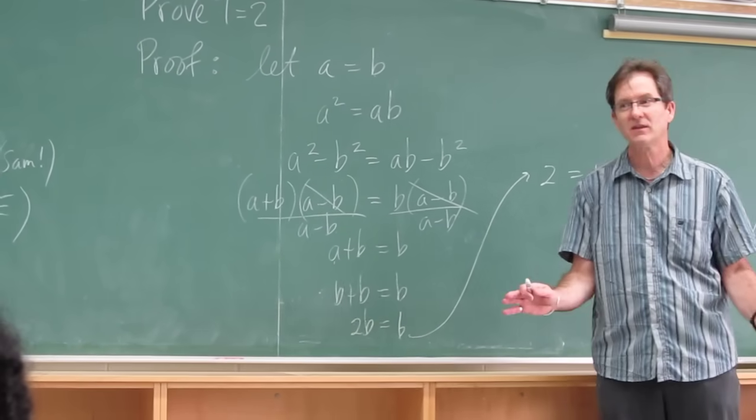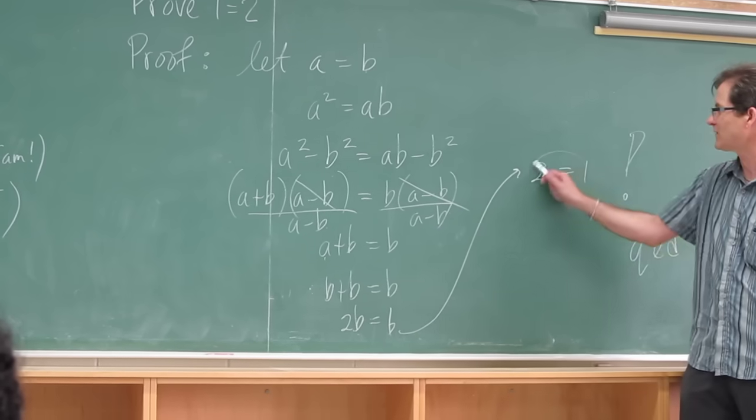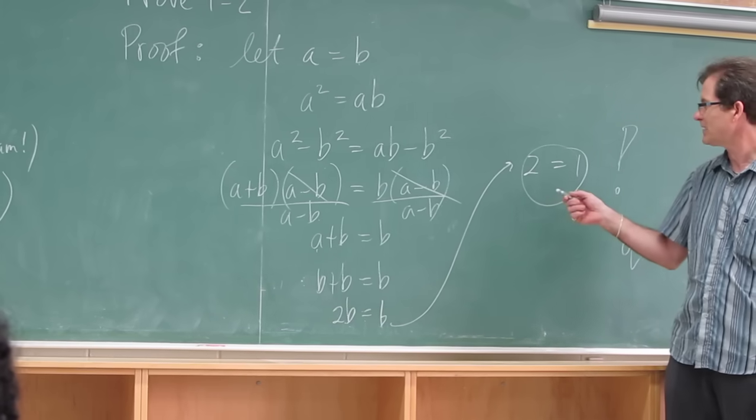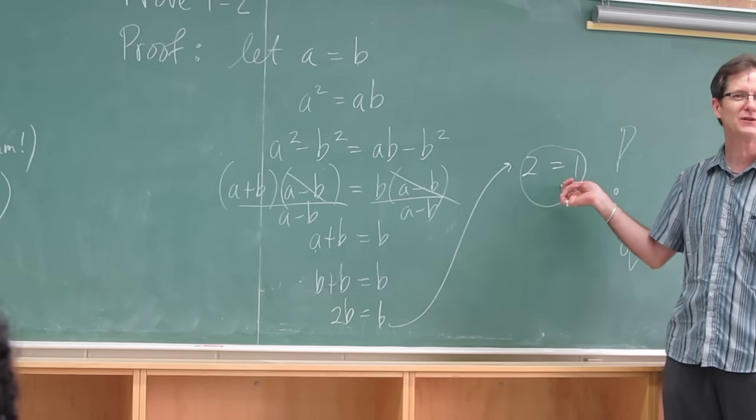When you divide by zero, all sorts of weird things can happen. You can prove all sorts of interesting things when you divide by zero. So don't divide by zero or you'll end up proving this. And then nothing in the universe will make sense.